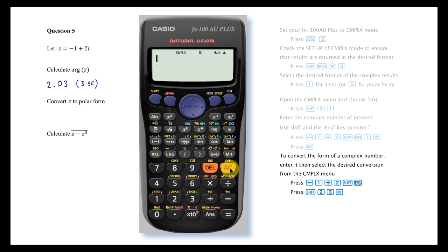To convert complex numbers between rectangular and polar form, enter the number to be converted and then select the desired conversion from the Complex menu.